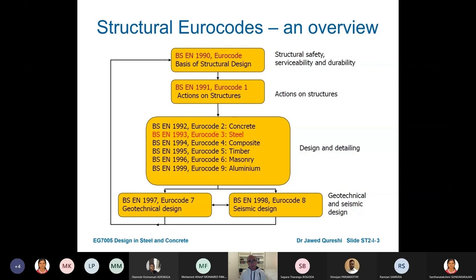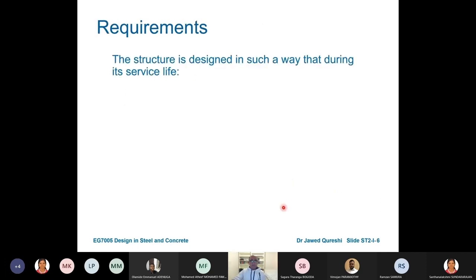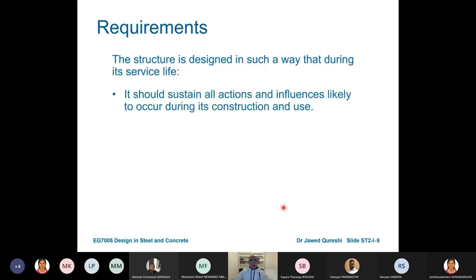We have Eurocode 2, Eurocode 3, and Eurocode 4 for steel-concrete composite structures. Eurocode 5 is related to timber, 6 to masonry, 9 to aluminium, 7 is geotechnical design, and 8 is seismic design.